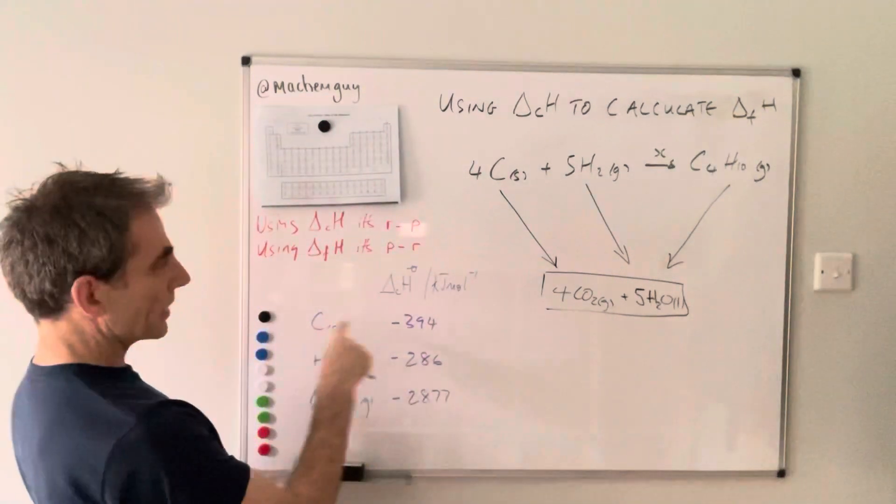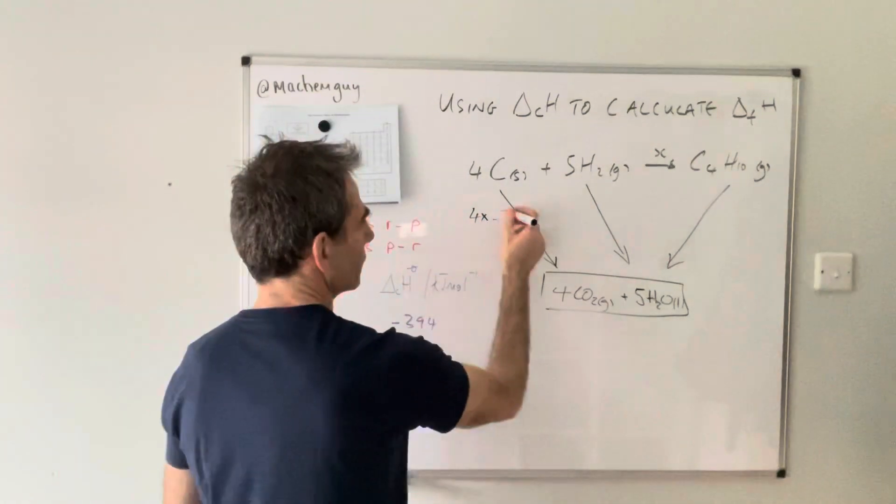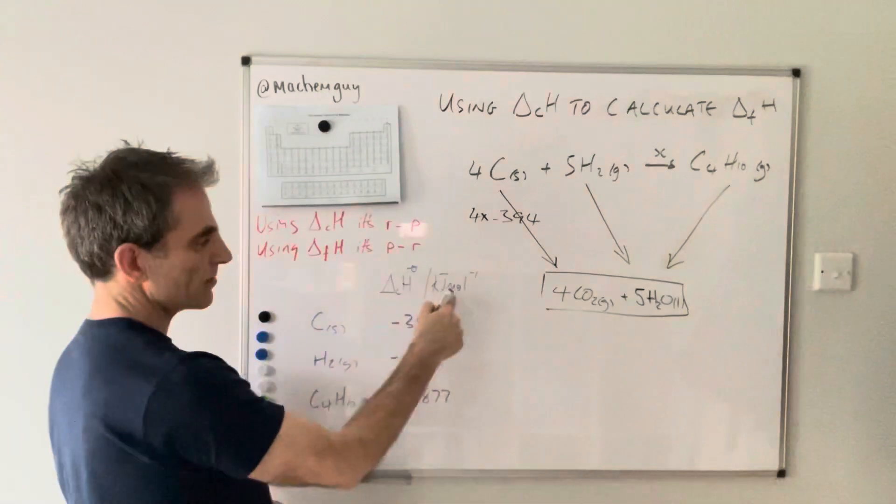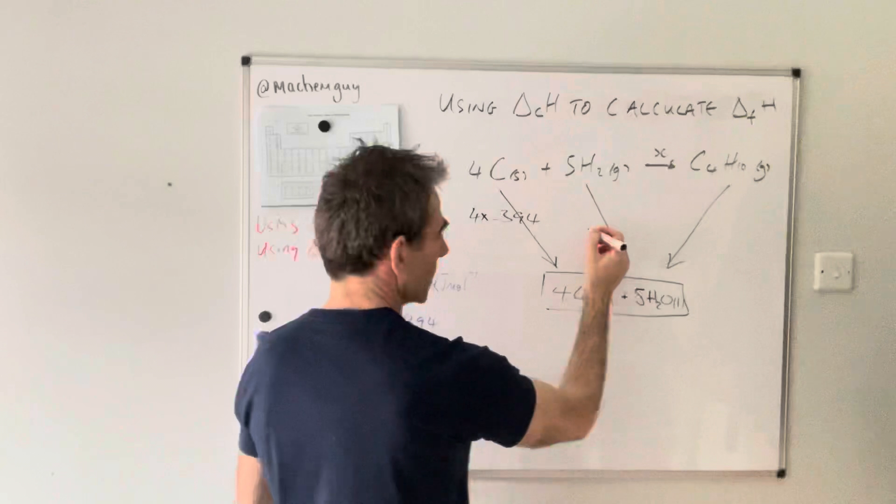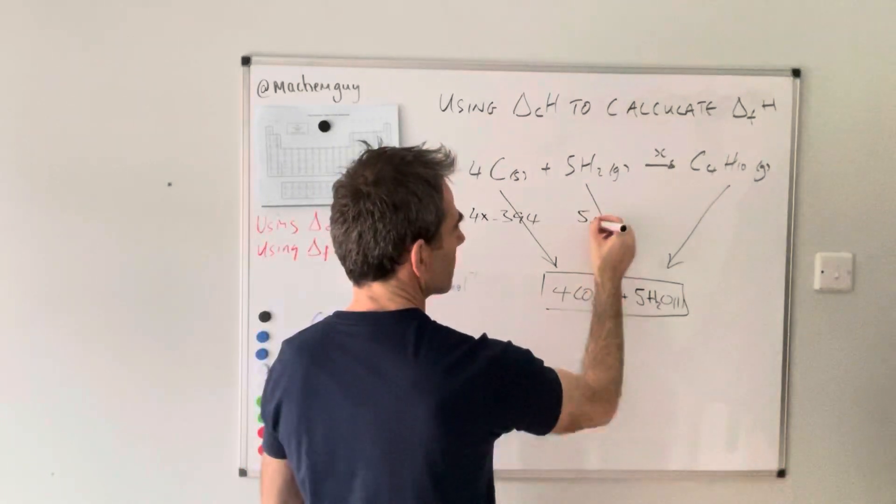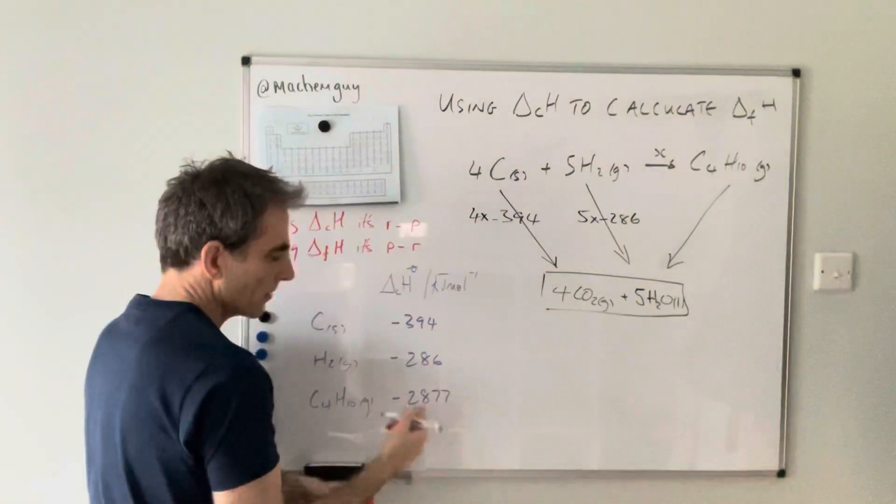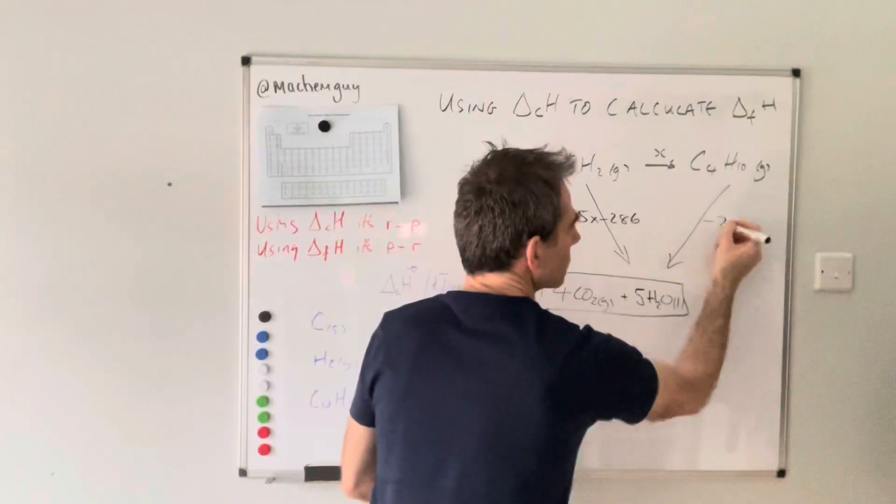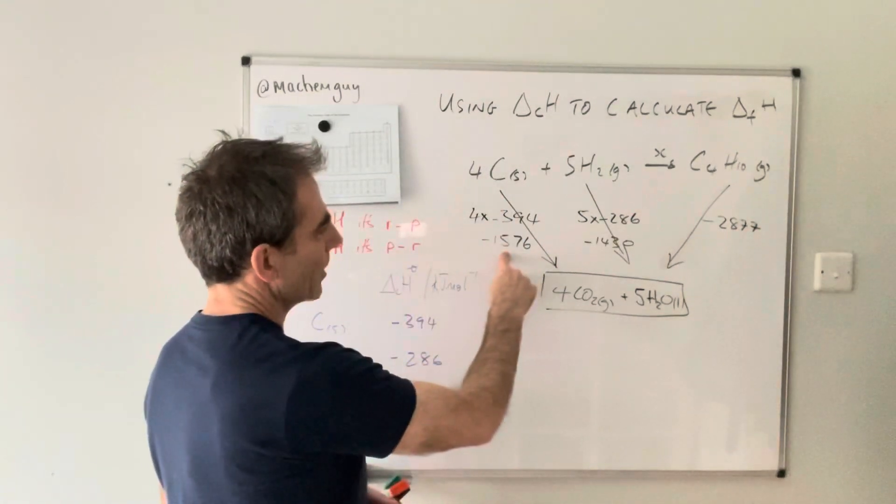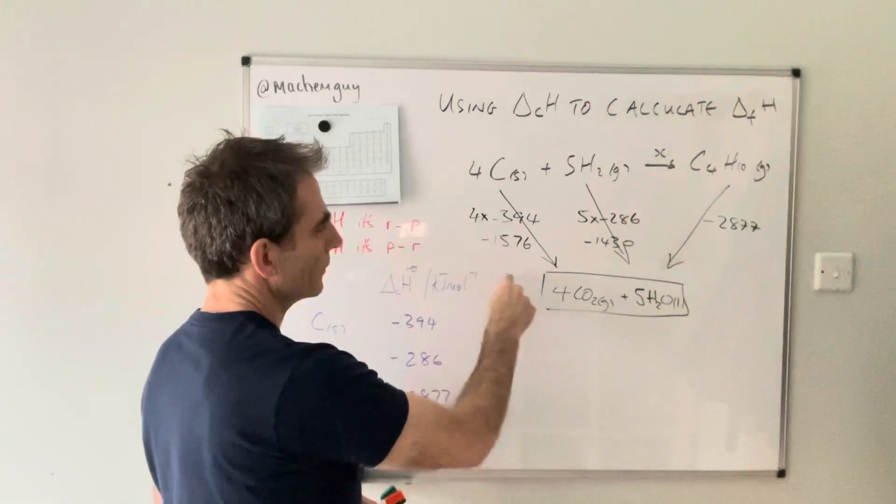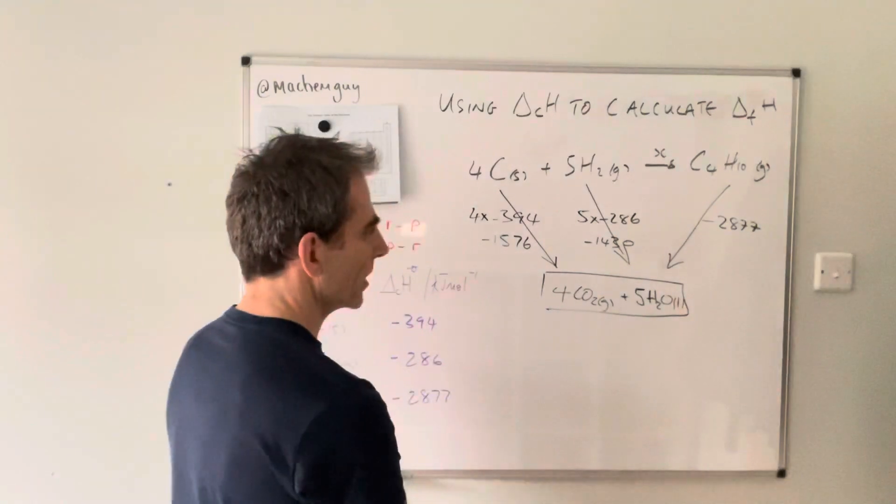Values-wise, that's going to be 4 × -394, because that value is per mole and we've got four moles. This is going to be 5 × -286, and this is going to be 1 × -2877. I've worked them out: the value for 4 × -394 is -1576, and that's -1430. That's just multiplied by one anyway.